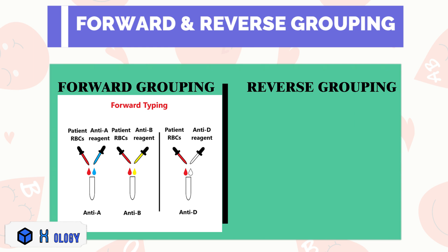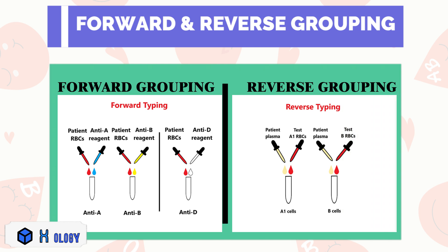In reverse grouping, it utilizes red blood cells of known A, B, and O blood groups. The patient serum is added to each tube, and agglutination of the corresponding red blood cells indicates the presence of antibodies against that antigen — anti-A or anti-B.